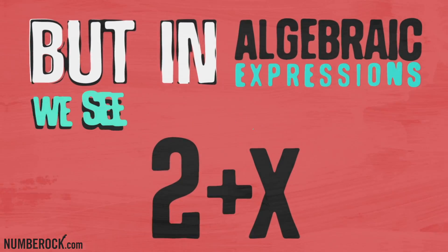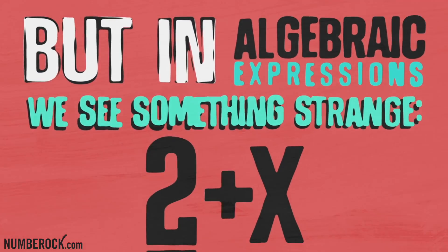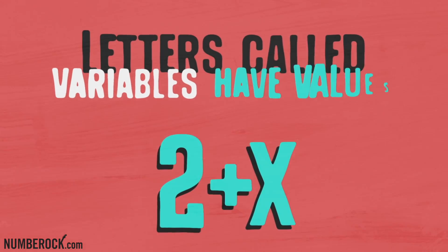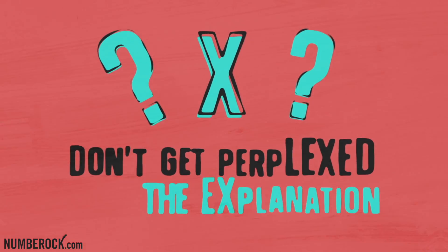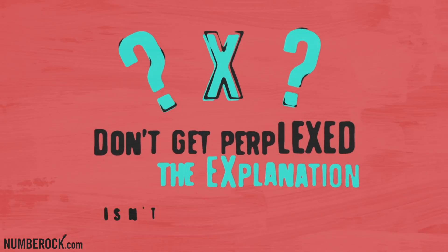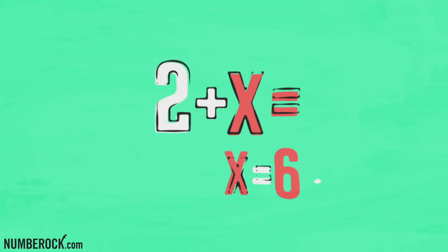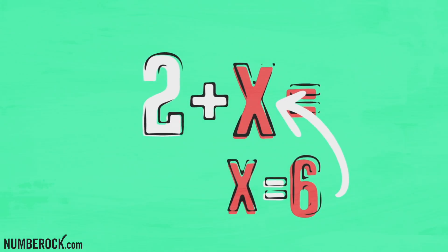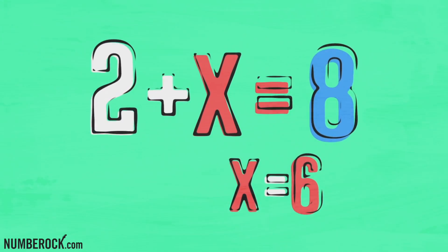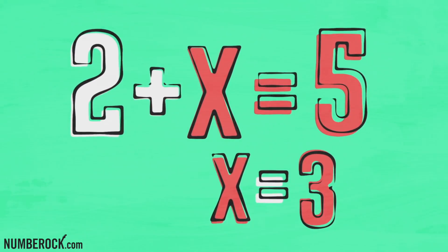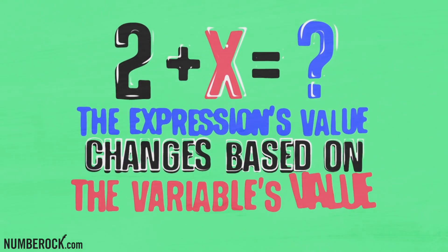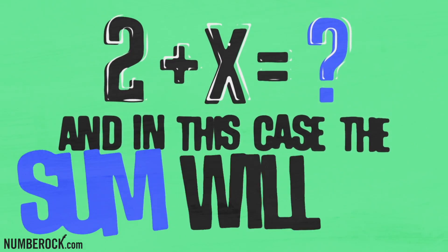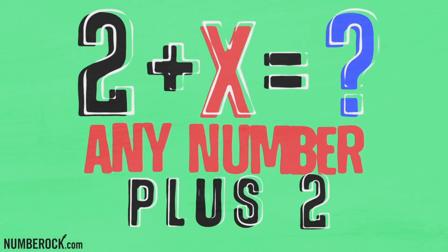But in algebraic expressions we see something strange — letters called variables have values that can change. Look at 2 plus x: what's the value of x? If x equals 6, then the value is 8. Or if we say x is 3, 5 is what we'll calculate. The expression's value changes based on the variable's value, and in this case the sum will be any number plus 2.